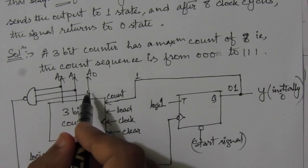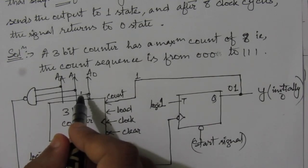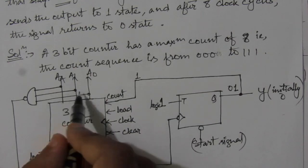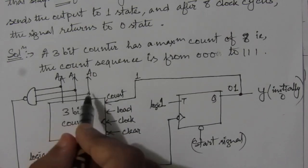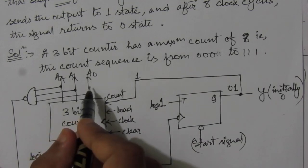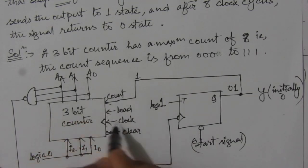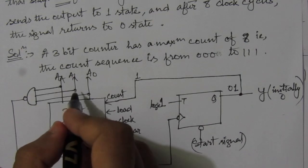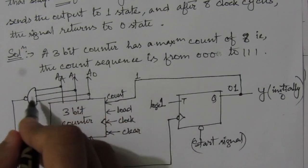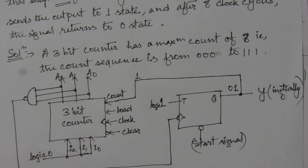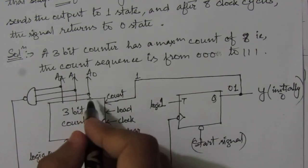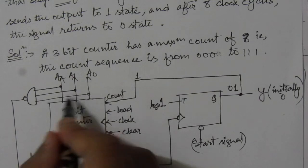Starting from 000, the counter increments: 000, then 001, then 010, then 011, then 100, and so on. When we reach 111 — that is after 8 clock cycles — the counter outputs all three bits as 1. This output is fed back to the NAND gate clock input. Previously, whenever any one input was 0, the clock input was high. Now with 1, 1, 1 at the counter output, the NAND gate output transitions from 1 to 0.